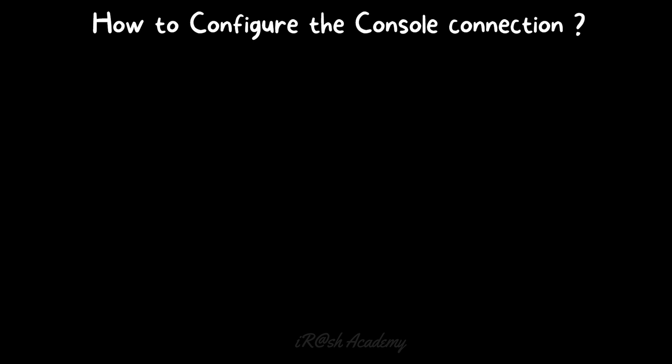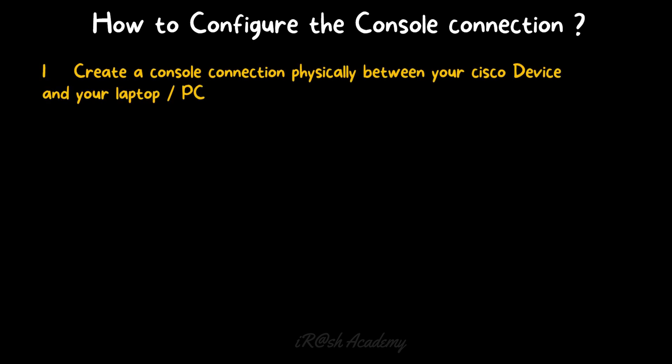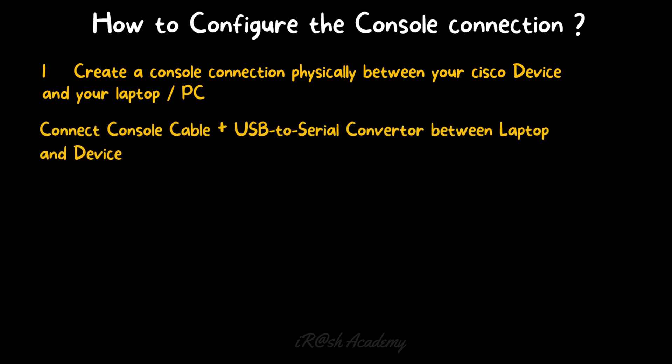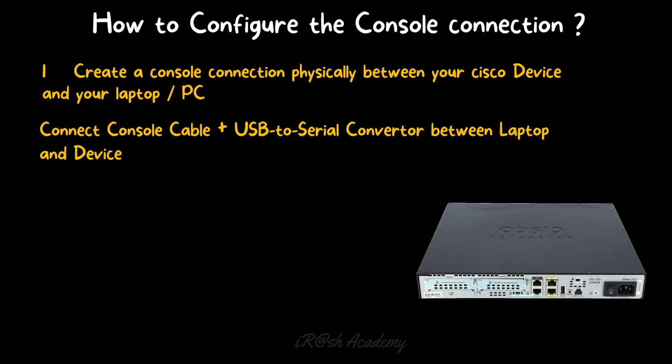To configure the console connection in your computer there are some steps you need to follow. Step number one: create a console connection physically between your Cisco device and your laptop or PC. To create a console connection physically, you need to connect the console cable and the USB-to-serial converter between the laptop and the device. For example, you have a network device — a router — and you need to access the console window of that network switch for configuration.